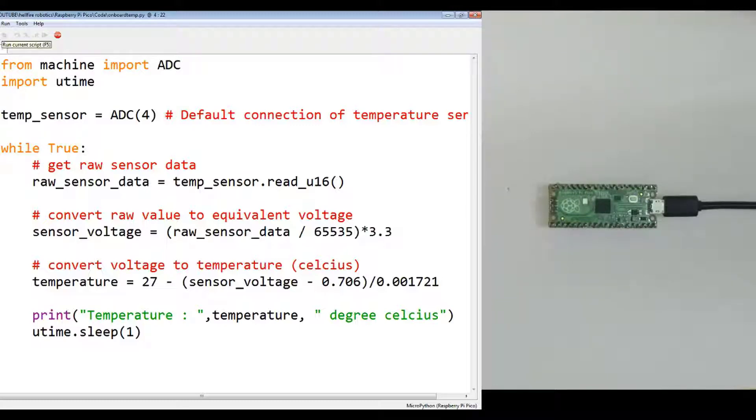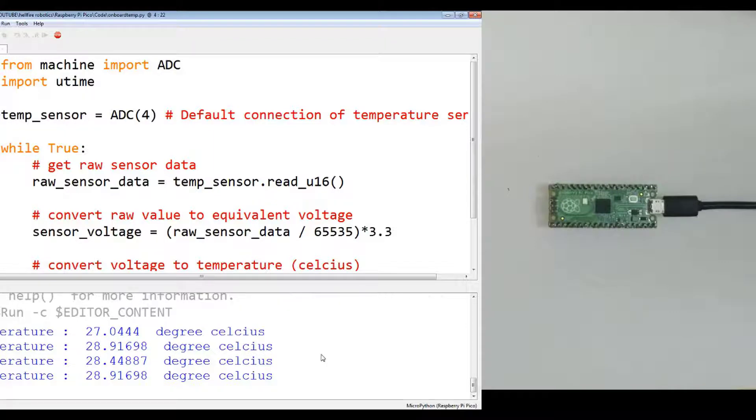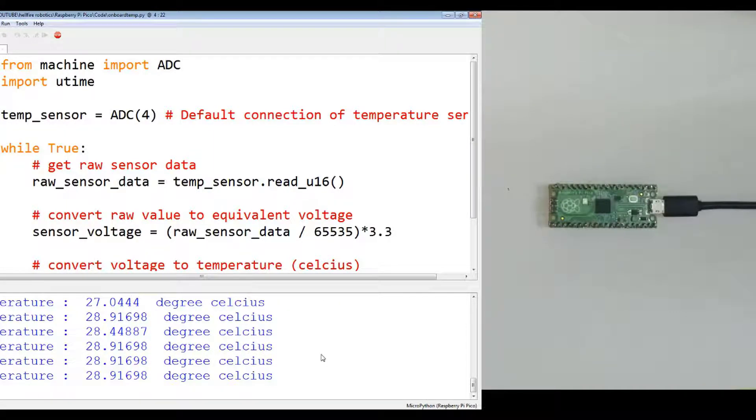First let me run the MicroPython script. See, this is giving you temperature readings every one second because I have programmed it to give the reading every one second. Now this is showing an ambient temperature of 28.9 degrees that is fluctuating a little bit.